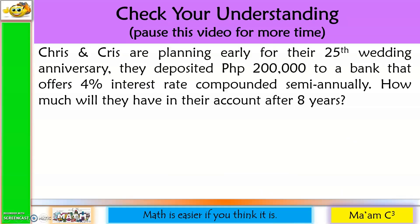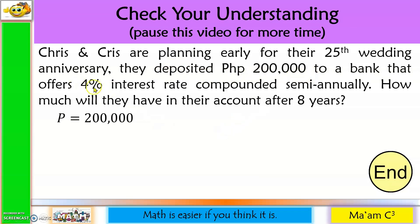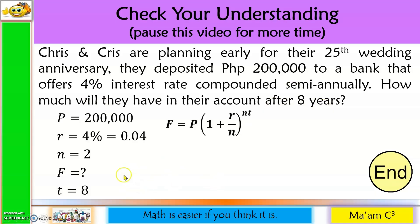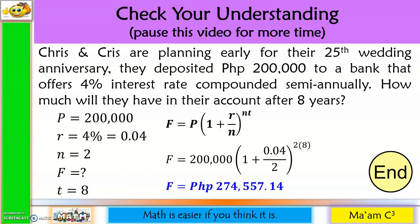Now it is time to check your understanding. Chris and Chris are planning early for their 25th wedding anniversary. They deposited 200,000 pesos in a bank that offers 4% interest rate compounded semi-annually. How much will they have in their account after 8 years? P is 200,000, R is 0.04, N is 2, and T is 8. Substituting into the formula gives us 274,557.14 pesos.